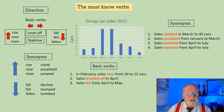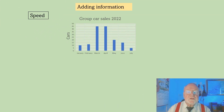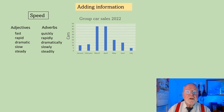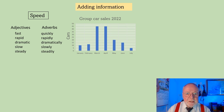Now let's add some more information to make our presentation more interesting — we can add how quickly or slowly the data are moving. Here we can use adjectives or adverbs. The adjectives are: fast, rapid, dramatic, slow, and steady. And the adverbs, which follow the verb, are: quickly, rapidly, dramatically, slowly, and steadily.